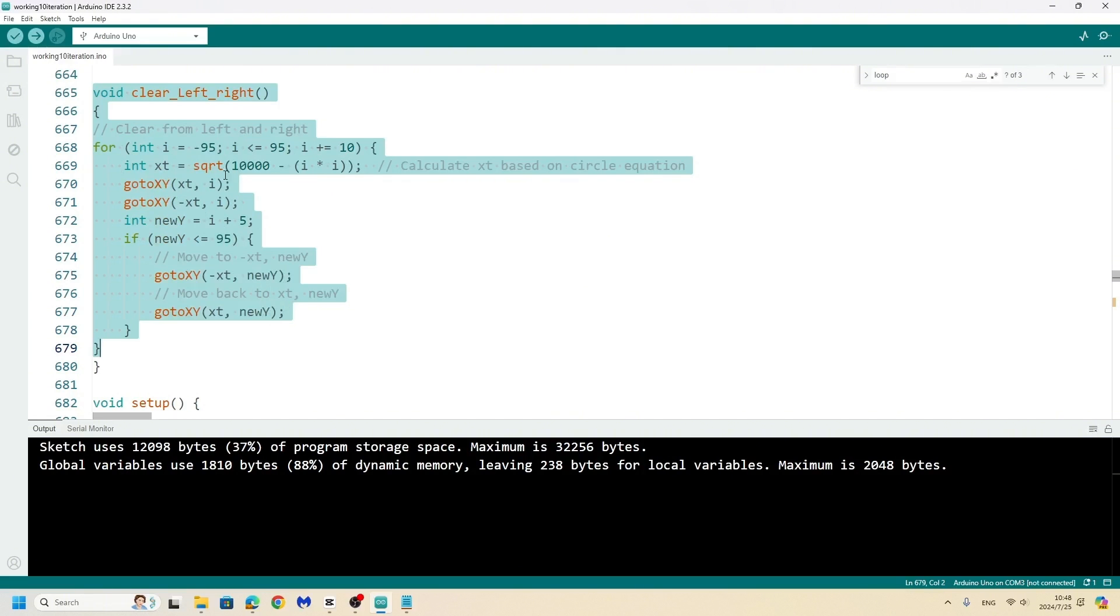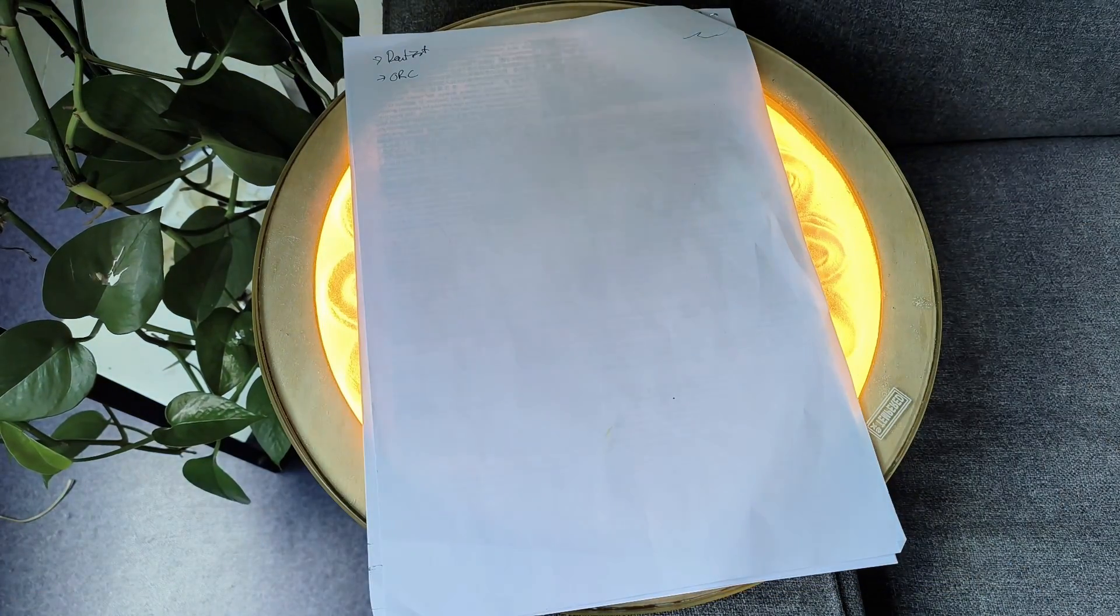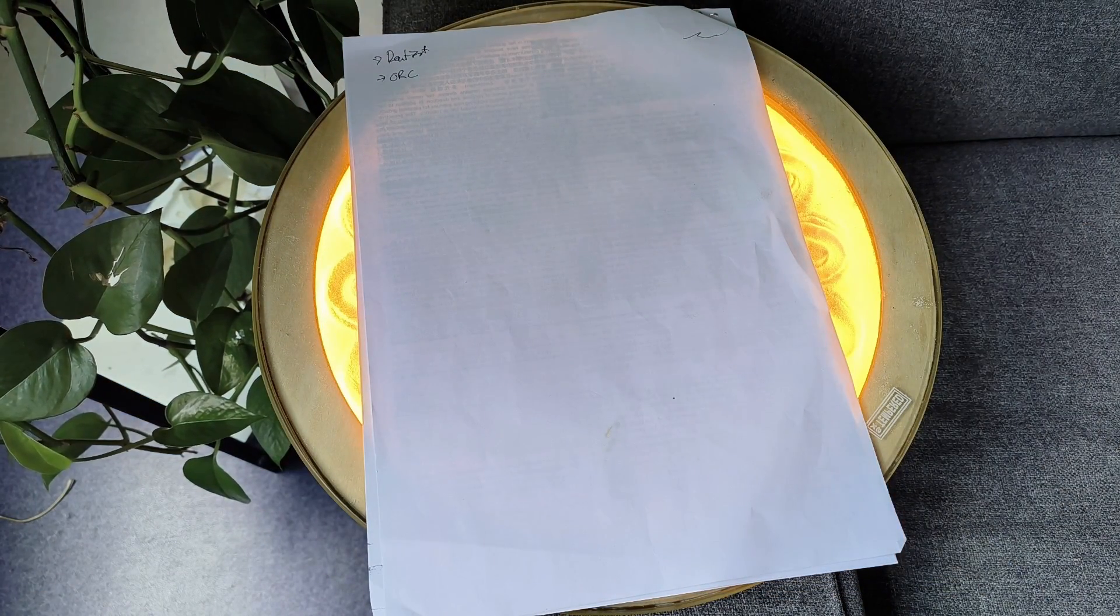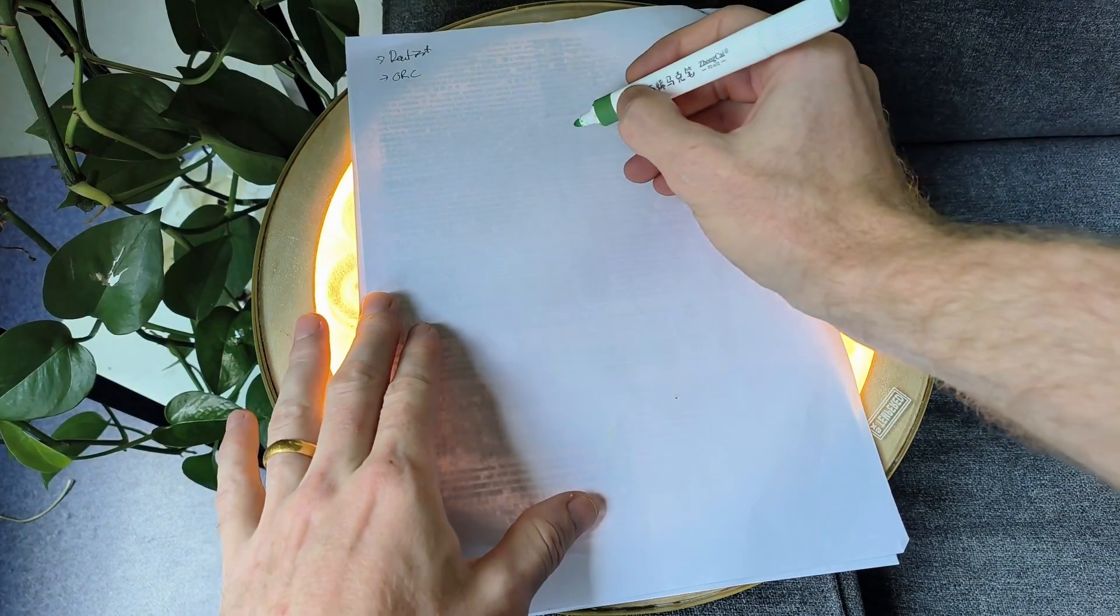It just calculates the points around a normal circle and the function will go between them. So how does that work? Let me draw it out so you can see it clearly.